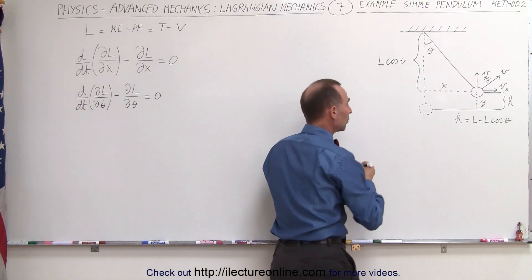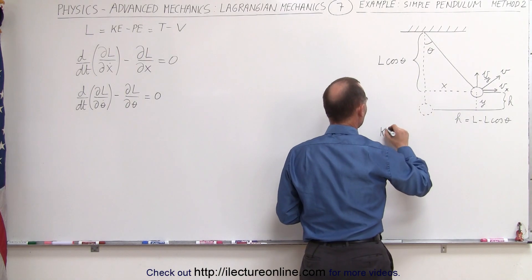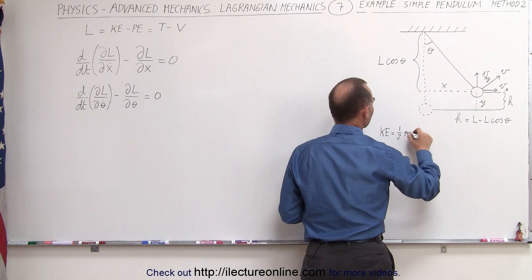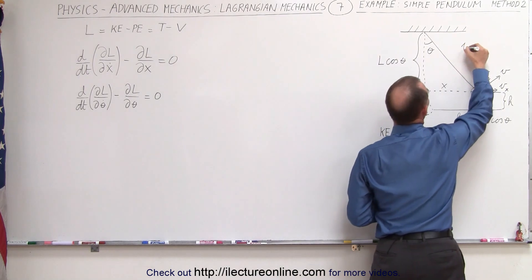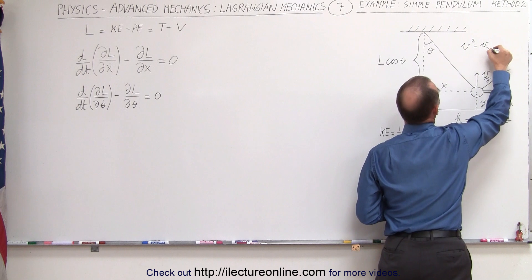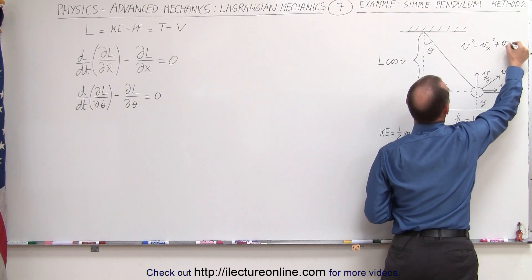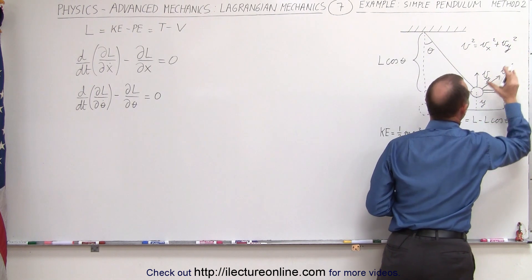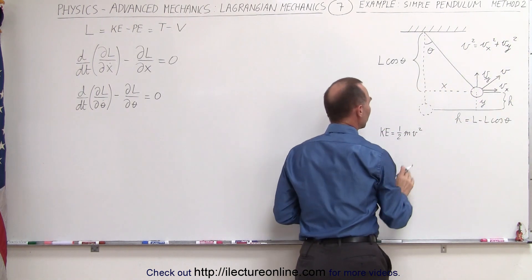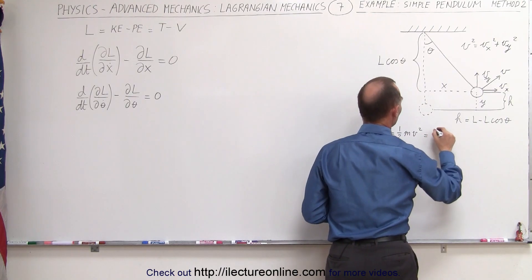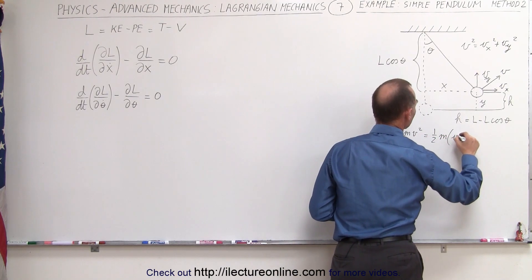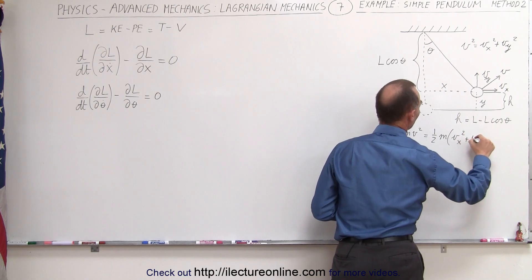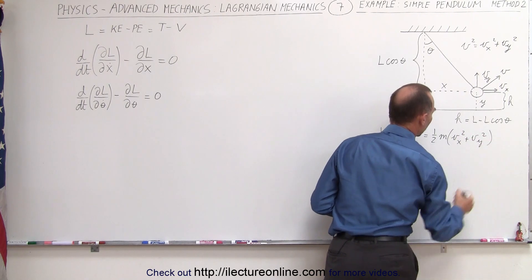Since the kinetic energy can be written as follows: kinetic energy is equal to one-half mv squared, and we know that v squared must be equal to v sub x squared plus v sub y squared, using the Pythagorean theorem. We can then say that this can be written as one-half times the mass times the quantity v in the x-direction squared plus v in the y-direction squared.